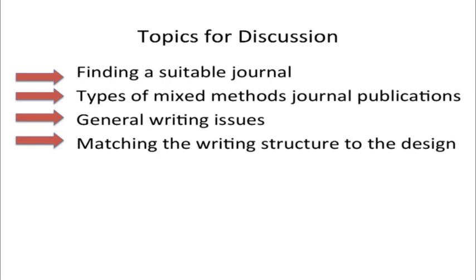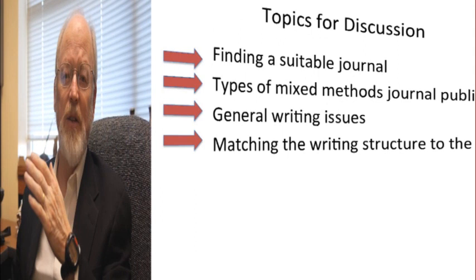In summary, when you're publishing a mixed methods study: find a suitable journal; think about the various types of mixed methods publications you could organize from your project — especially consider three publications, a quantitative, a qualitative, and an overall mixed methods publication; consider general writing issues such as word length and how you're going to educate the readers as to what mixed methods is; and finally, match the writing structure — especially the results and discussion section — to reflect the type of mixed methods design that you're using in your study.